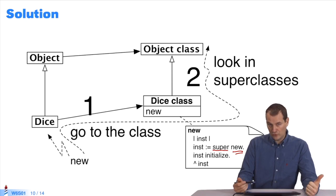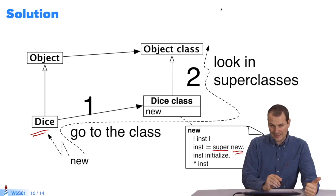I'll repeat it. Super is the receiver of the message, which in this case is Dice. I look in the superclass of the Dice class for the new method that I will apply to Dice, the receiver, to find my terminal instance. Okay?